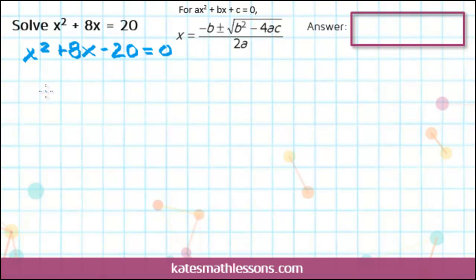So now we can identify our values of a, b, and c. a is always the value of the coefficient in front of the x squared term. In this case there's really a 1 here. The b value is the coefficient of the x term, so we have a positive 8, and c is the value of the constant at the end. So since we have a minus 20, that means our c is negative 20.